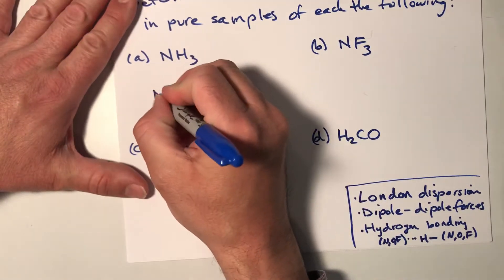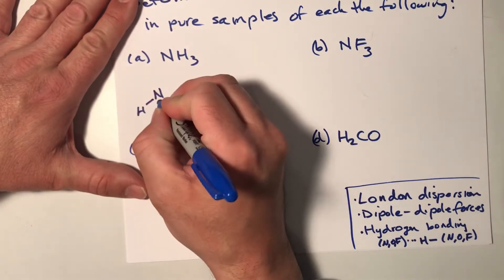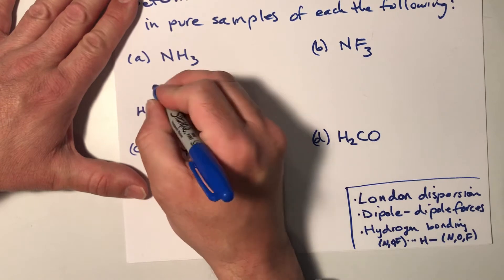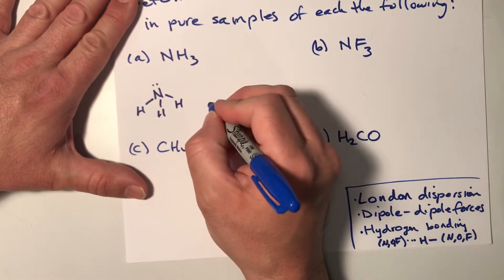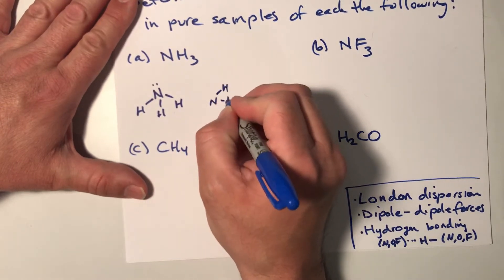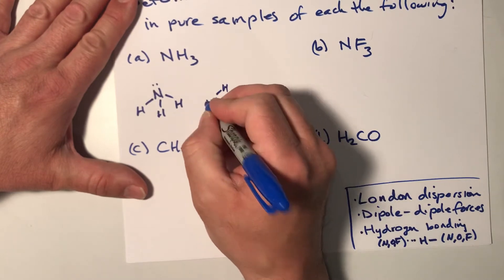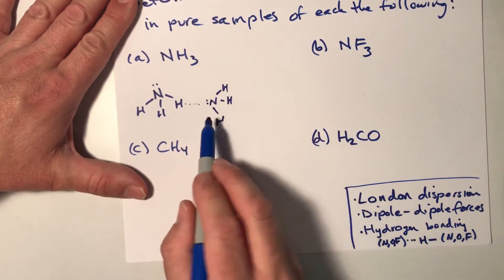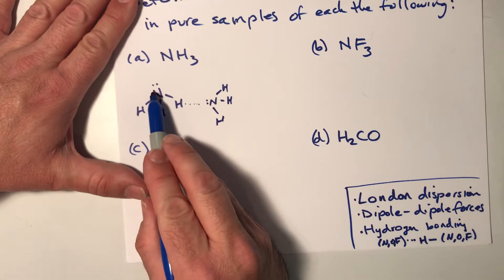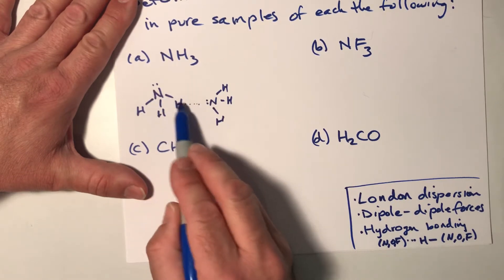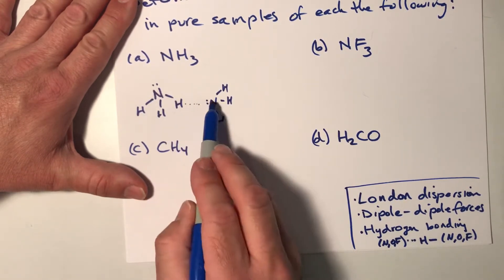So NH3 has H's, it has N's. When you draw the Lewis structure, it's going to be pyramidal, like this, and so we could have a situation where here's a neighboring ammonia, and now we have the magic N to H to N bridge that we're always looking for.